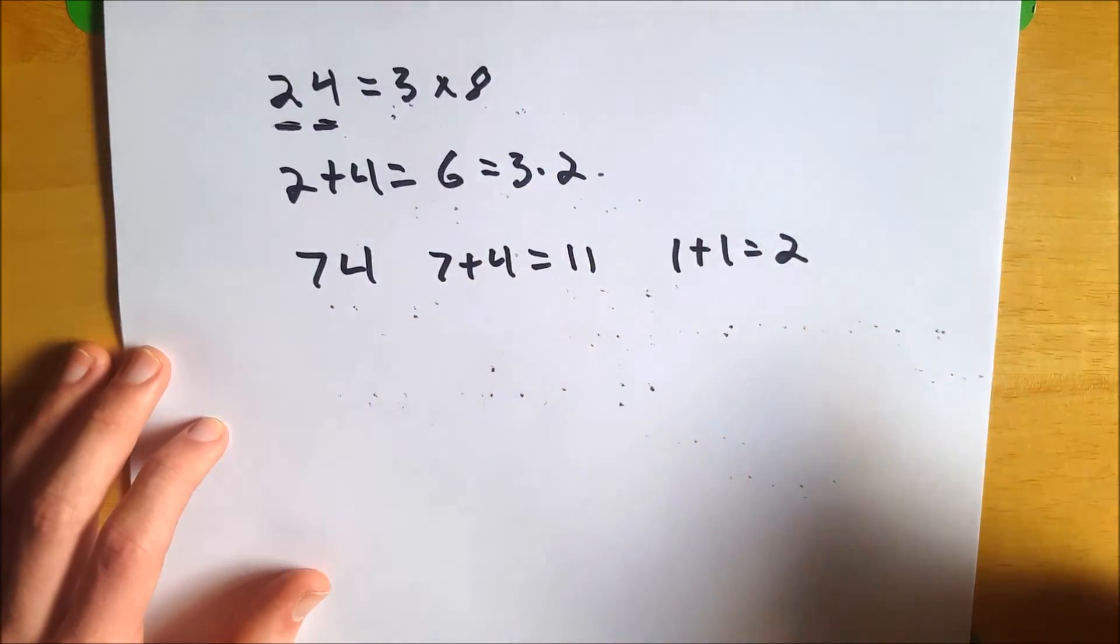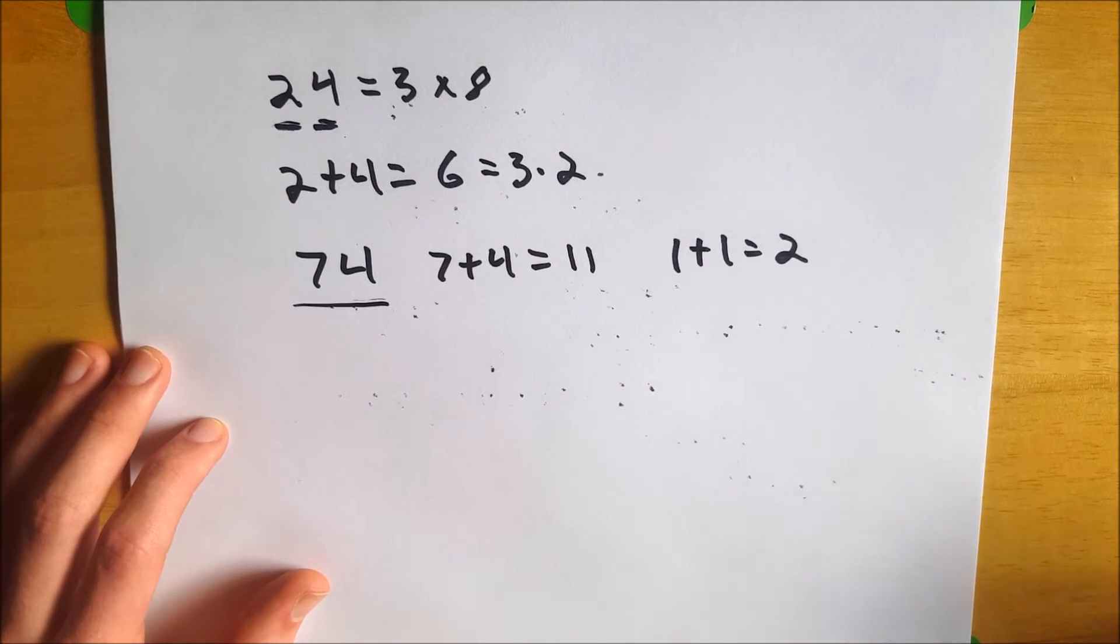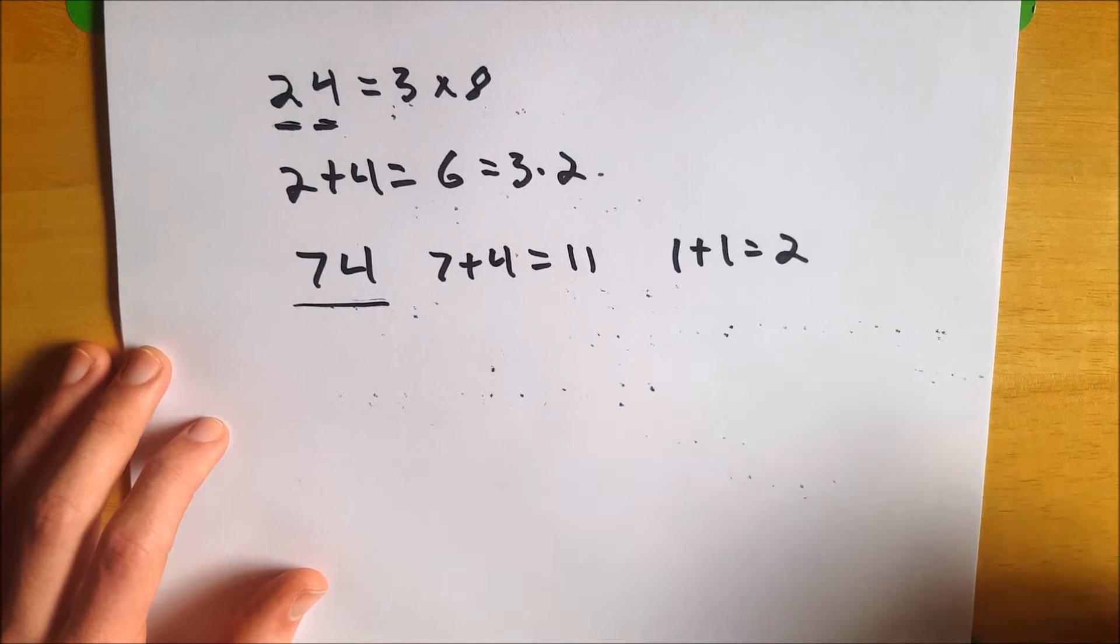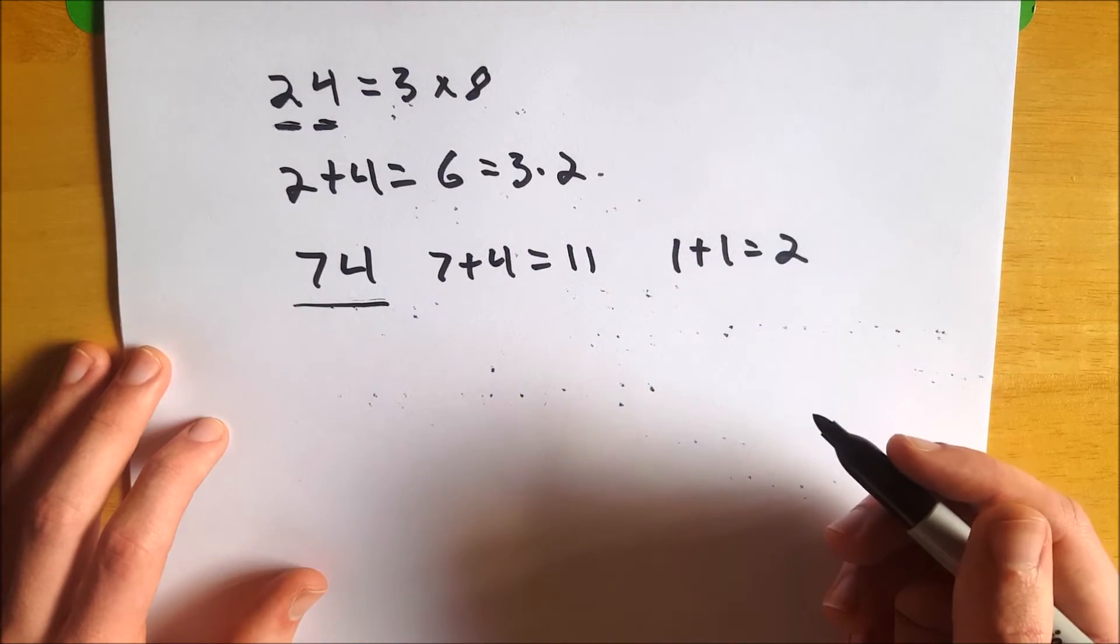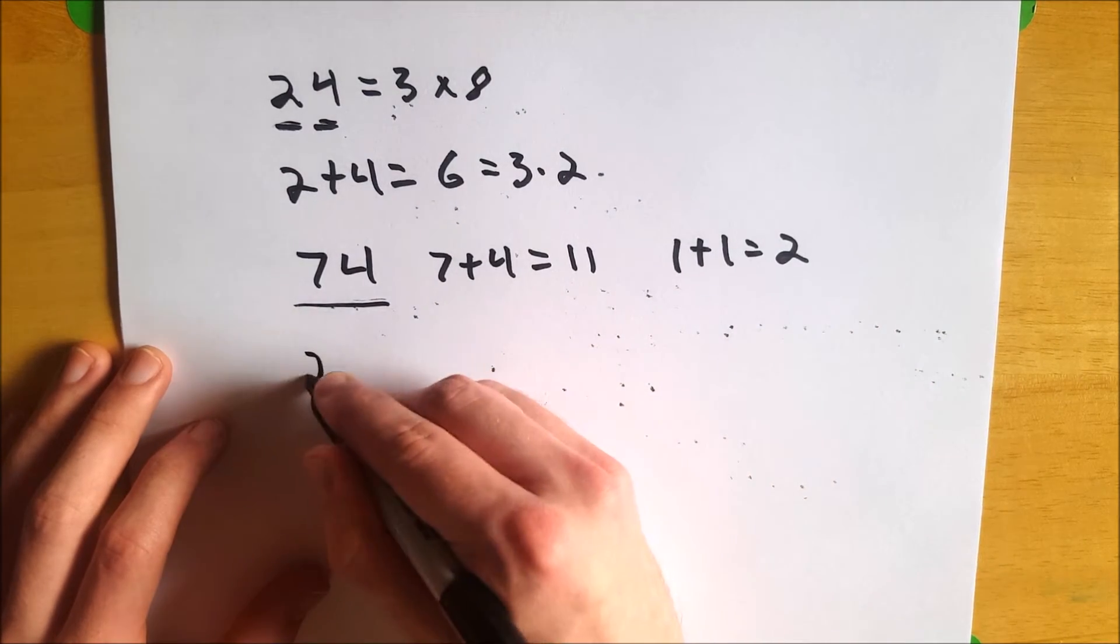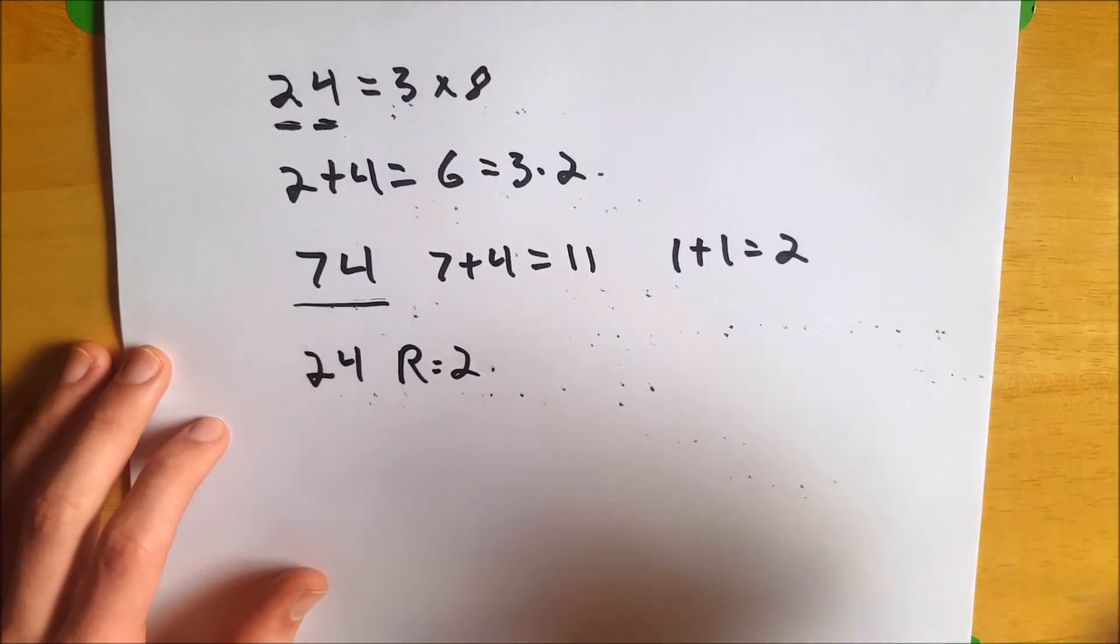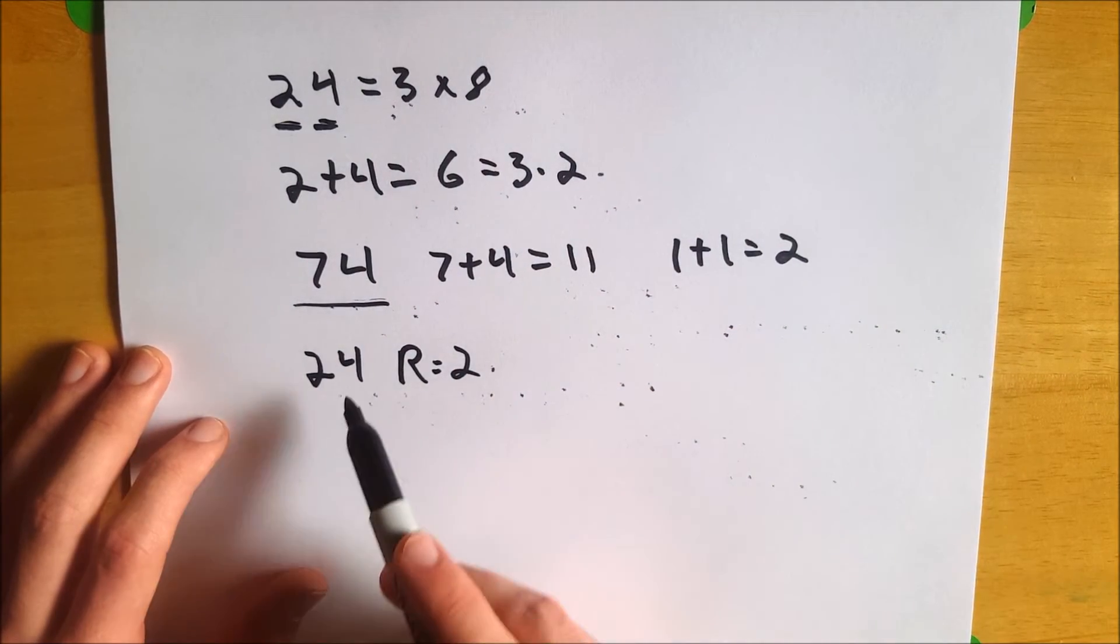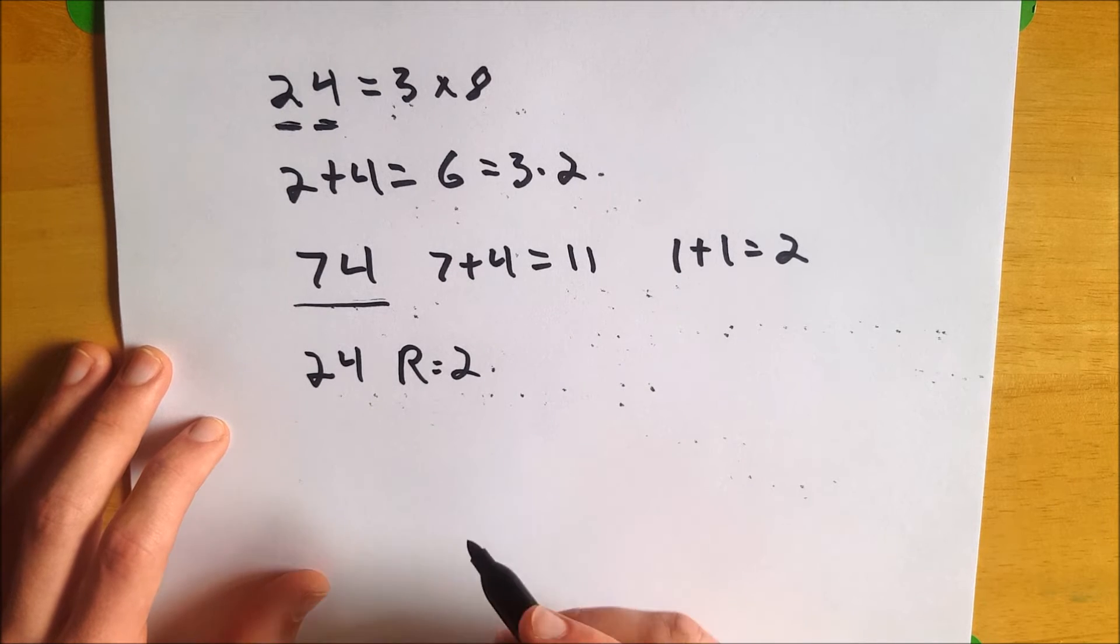2 is not divisible by 3, so 74 is similarly not divisible by 3. It would end up being 24 with a remainder of 2 if you were to divide 74 by 3, because 3 times 24 is 72, which leaves 2 left over. So 74, not divisible by 3.